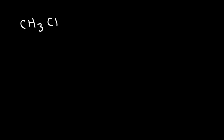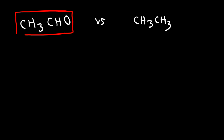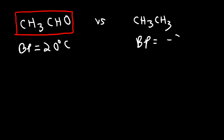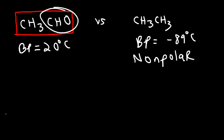What about acetaldehyde and ethane — which one will have a higher boiling point? The answer is acetaldehyde. Acetaldehyde has a boiling point of about 20 degrees Celsius and ethane has a boiling point of negative 89 degrees Celsius. Whenever you have a hydrocarbon that contains only carbon and hydrogen atoms, that molecule is nonpolar. But because of the aldehyde functional group, acetaldehyde is polar.